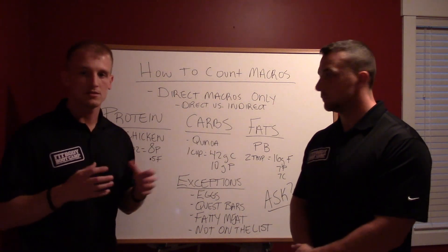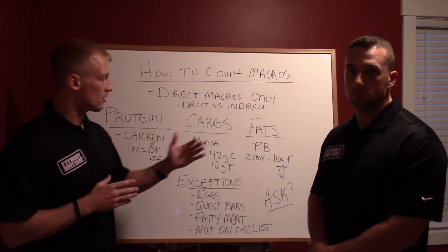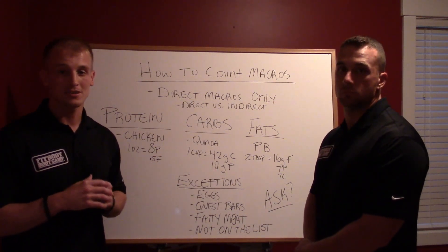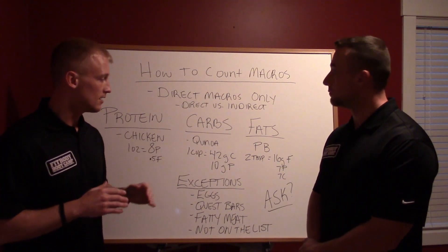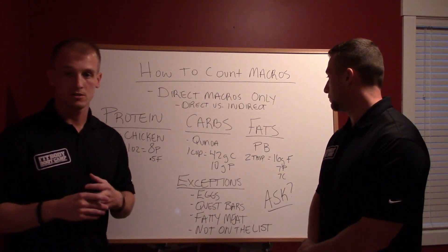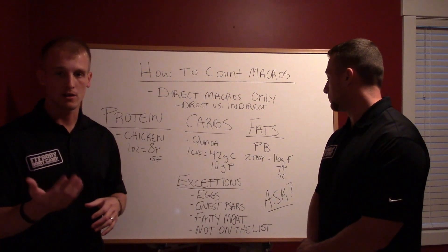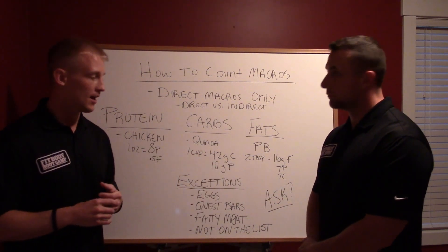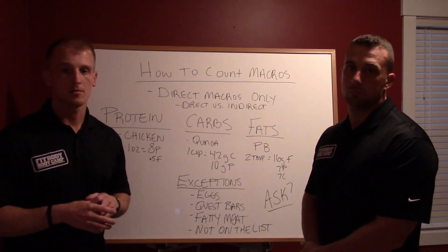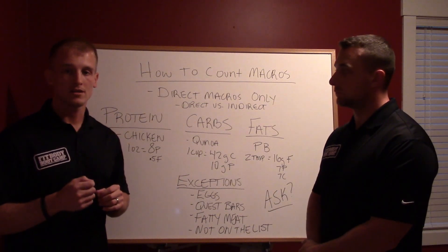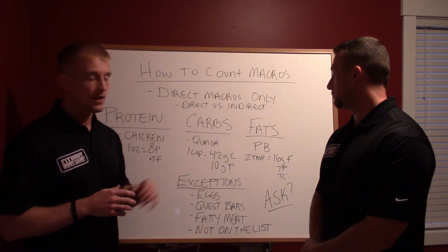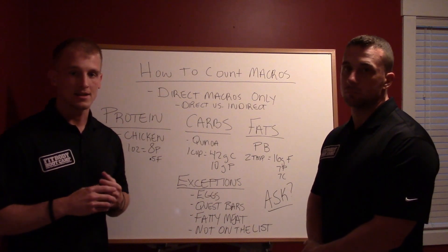Now fats — just to beat this over the head a little bit — a great example would be peanut butter. Peanut butter is actually 70% fat. Two tablespoons equals 16 grams of fat, which is what you're going to count. It also has 7 grams of protein and 7 grams of carbohydrates — those are indirect sources. You do not need to count them; you would only count the fat.